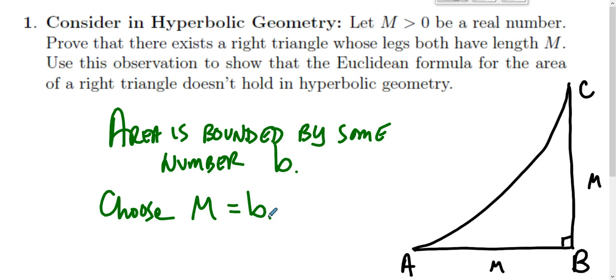Choose M equal to B, or if B is very very small, choose M equal to two. Area is bounded by some number B. Choose M to be equal to B, then one half B squared is greater than B, and that's a contradiction.